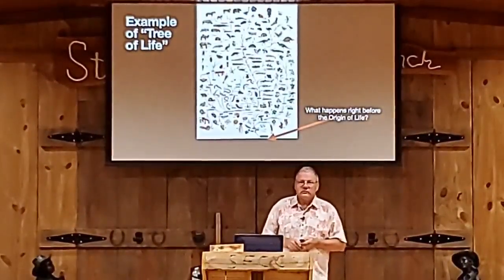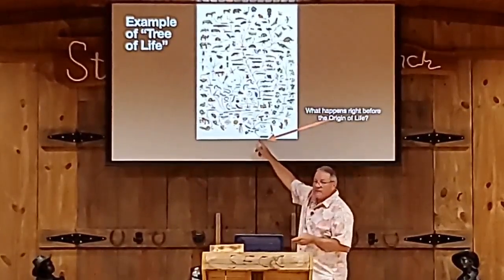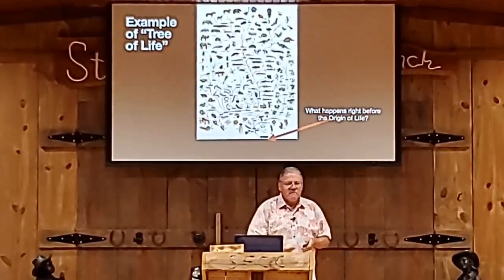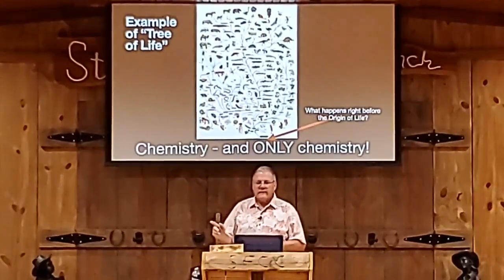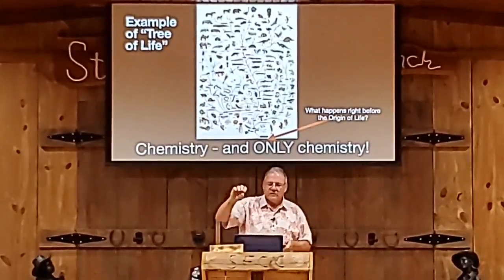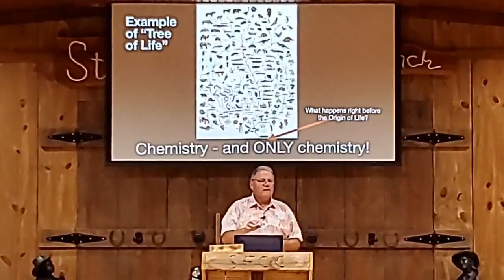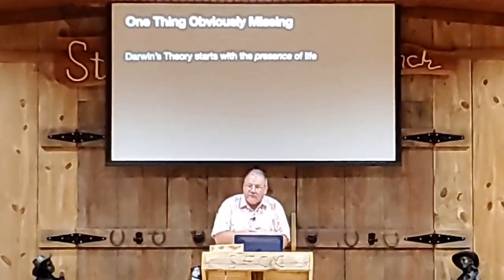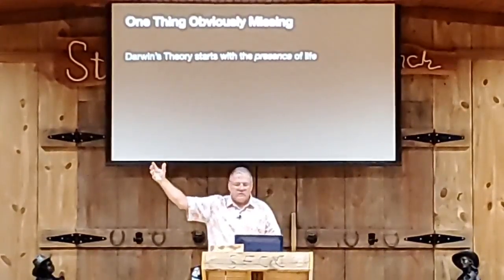I looked at the tree of life slide and asked: what happens before that little green box that says 'origin of life'? Here's the answer — chemistry happens before that. Not biochemistry, chemistry. Think high school chemistry class. Chemistry is all that existed. Darwin's theory starts with the presence of life. Once you have life, then the idea of successive adaptation and creating new species comes into play. But his theory means absolutely nothing before life exists.